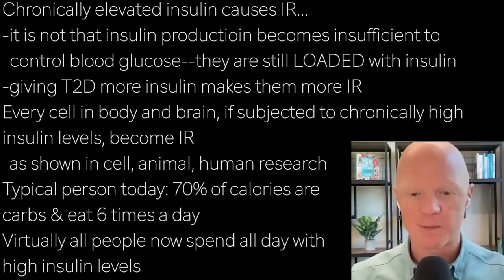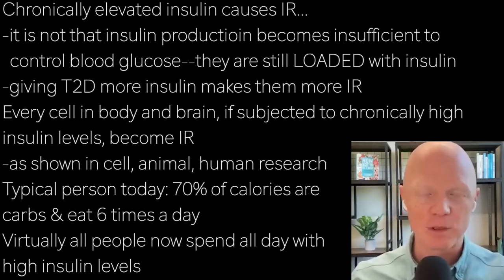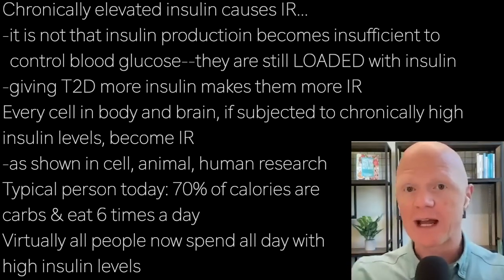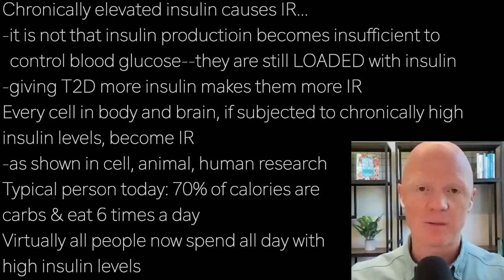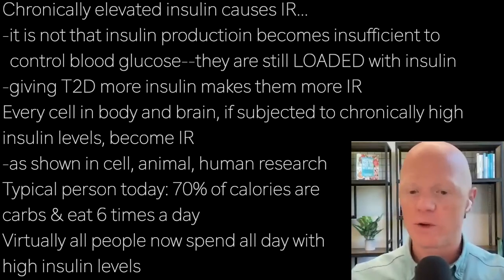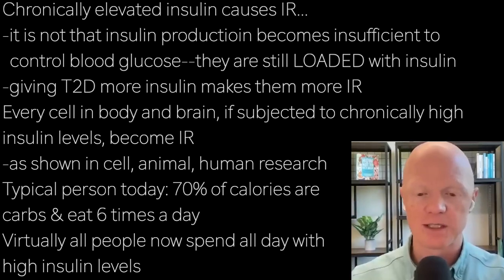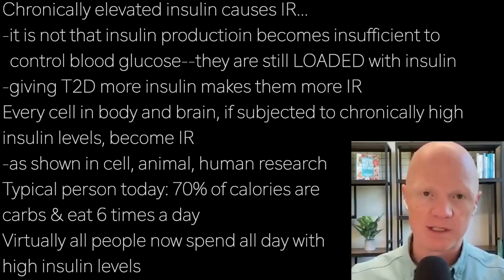Every cell type we've used in the lab — muscle cells, liver cells, neurons, brain cells — if they are exposed to even physiological but chronically elevated levels of insulin, they become insulin resistant. You can create this whether it's cells, animals, or humans. That's been published in all three commonly used biomedical models: cells, rodents, and humans. If you increase the insulin and keep it there for a period of time, they become insulin resistant.